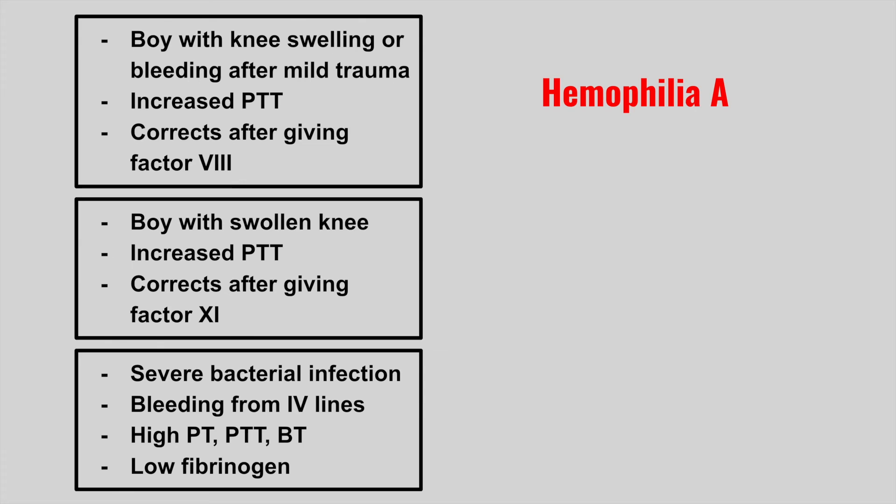Next, we have a patient again — a boy — with a swollen knee and increased PTT, but this time it corrects after giving factor 9. This is hemophilia B. Remember the hemophilias are X-linked recessive, which is why boys get these conditions more.